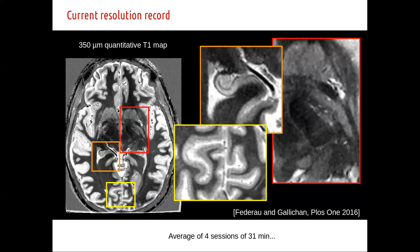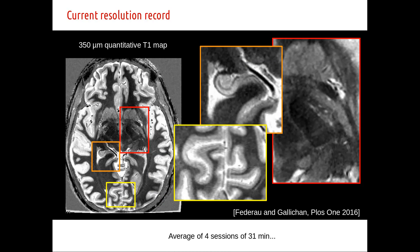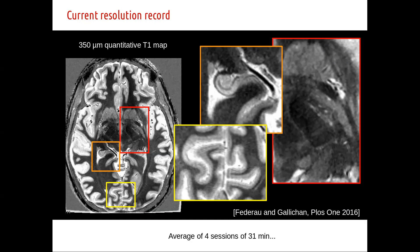So we tried to go in that direction. We looked at what the current records openly available are in terms of resolution. There are beautiful maps from Dan Gallichan's group from 2016, at 350 microns — quantitative maps of the entire brain from one individual, four sessions of 30 minutes each per contrast, roughly 12 hours of scanning per individual. Obviously that's not something you can scale up, so we went back to shrinking down this approach.